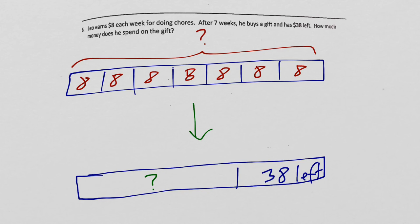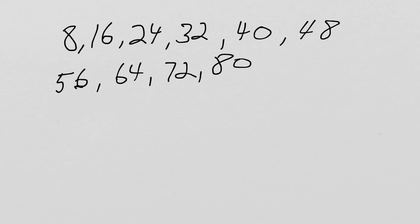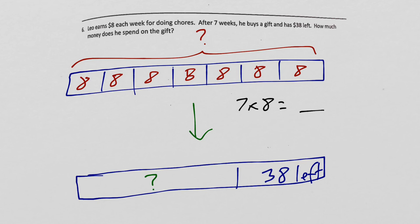The first part of the problem is this top one. I have, looks to me like I have 7 groups with 8 in each. I'm going to write that as multiplication. 7 times 8, that's one I have memorized. But if you don't, you could flip back and count by 8s on the last page like this. Let's do it together. 1, 2, 3, 4, 5, 6, 7. That's why it's so handy to make that count by. 7 times 8 equals 56. So we know he earned $56.